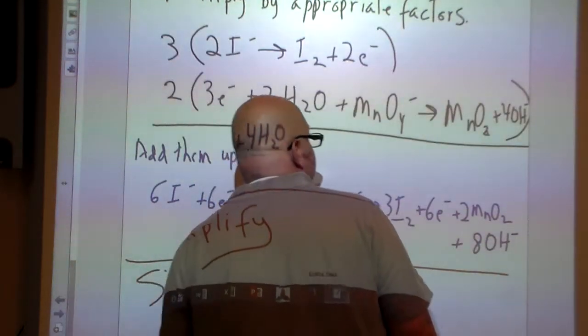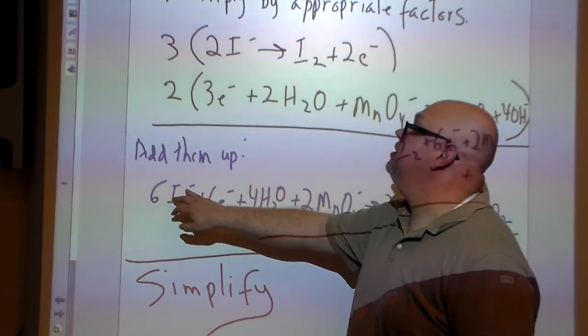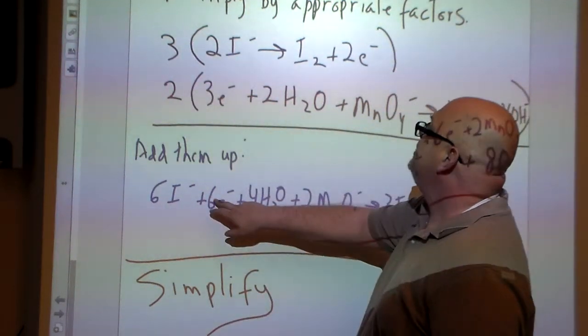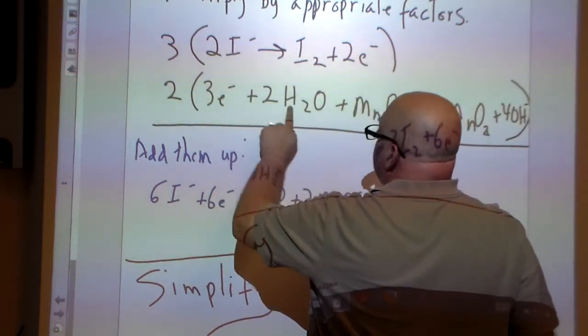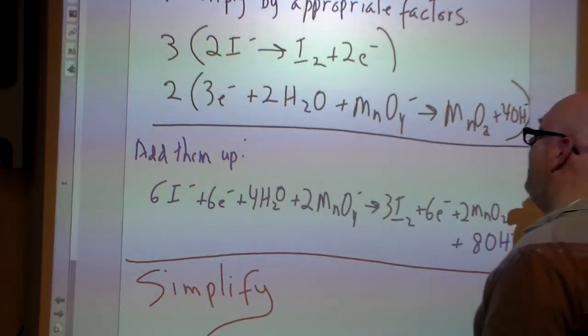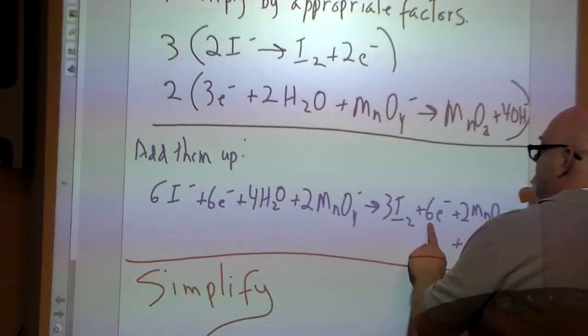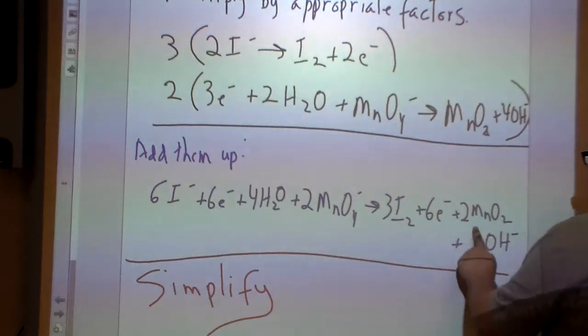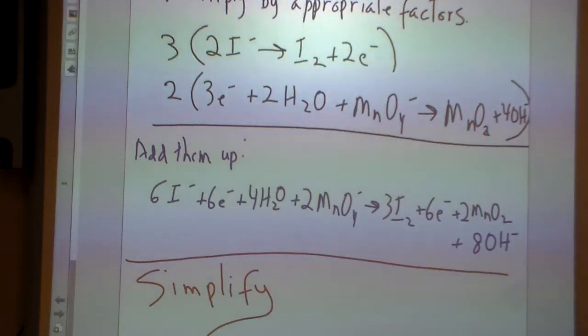Nobody ever said that redox was going to be an easy job, we just said you're going to need to do it. So you're going to add them up. You have six iodine with a minus one charge, six electrons, four waters, and then two MnO4, two times one MnO4 gives us two. Now we're going to go on the opposite side. Three times I2, three times two gets us six electrons, two times MnO2, two times one is two, and then two times four OH is eight OH. This is just downright messy, but it's not over.